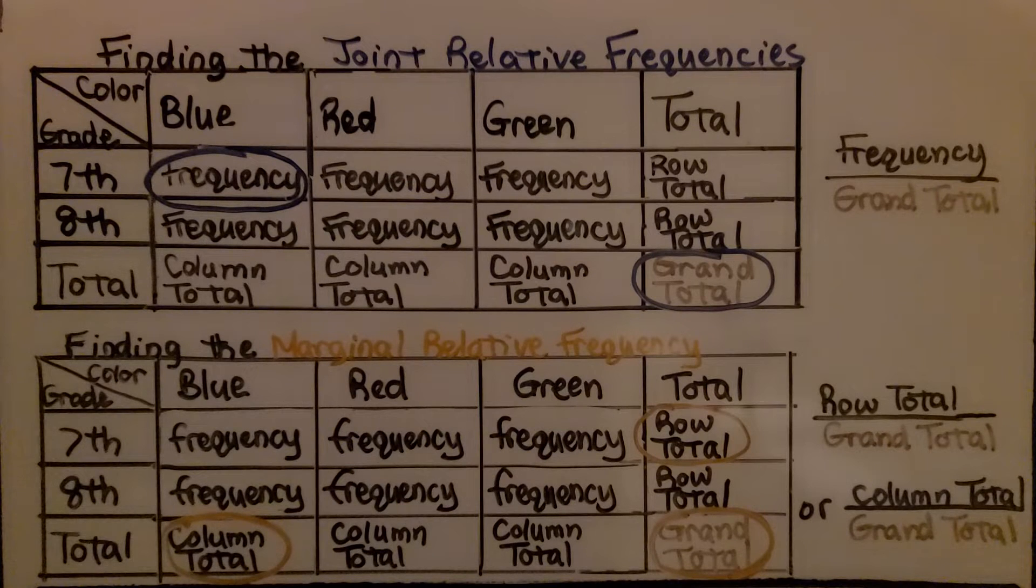To find the marginal relative frequency, we divide the row total by the grand total or we divide the column total by the grand total. Notice that both the joint relative frequency and the marginal relative frequency involve the grand total.